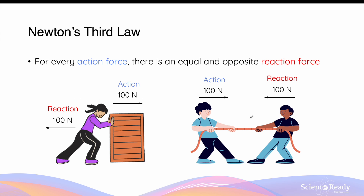In the case where there are two people pulling on a rope, the person on the left is experiencing 100 N of action force due to the pulling action of the person on the right. And by Newton's third law, the person on the right will experience a reaction force of the same magnitude but in the opposite direction, towards the left.